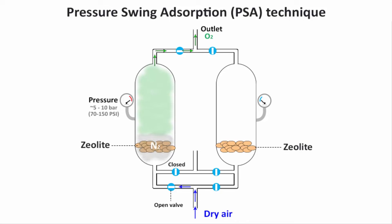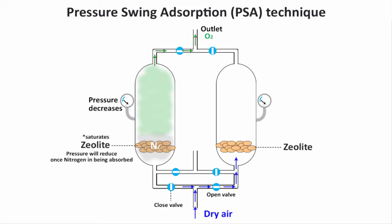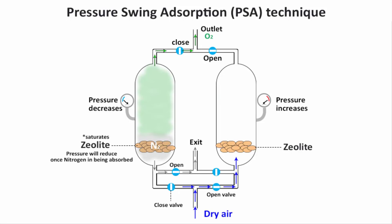While the first tank is removing nitrogen, the pressure in the first tank slowly reduces. Compressed air is then directed into the second tank by shutting the inlet of the first tank. When pressure decreases in the first vessel and the zeolite becomes saturated with nitrogen, the waste product is exhausted through the exhaust system. Simultaneously, pressure in the second vessel builds up due to incoming compressed air, and nitrogen settles down due to the presence of zeolite. This entire cycle is controlled electronically so that when the pressure of the first tank goes down, the pressure of the second tank will be up, and vice versa.